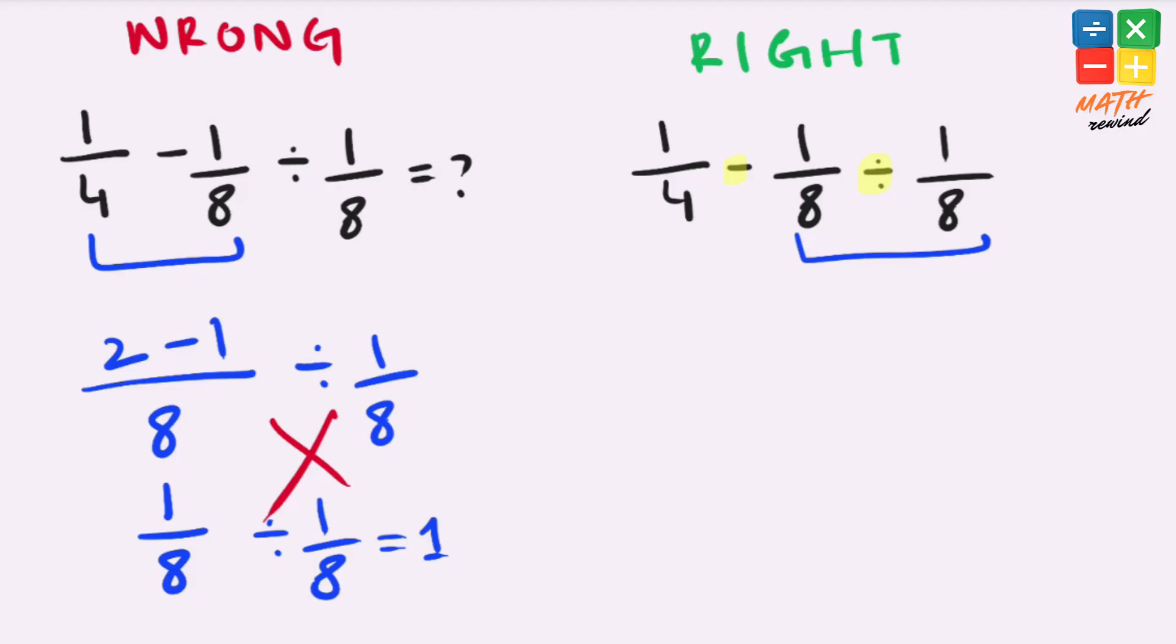To simplify these fractions we can use the KCF rule here. K means keep, so we keep 1 over 8 as it is. Change means we change the operator from division to multiplication, and flip means we flip the fraction from 1 over 8 to 8 over 1.